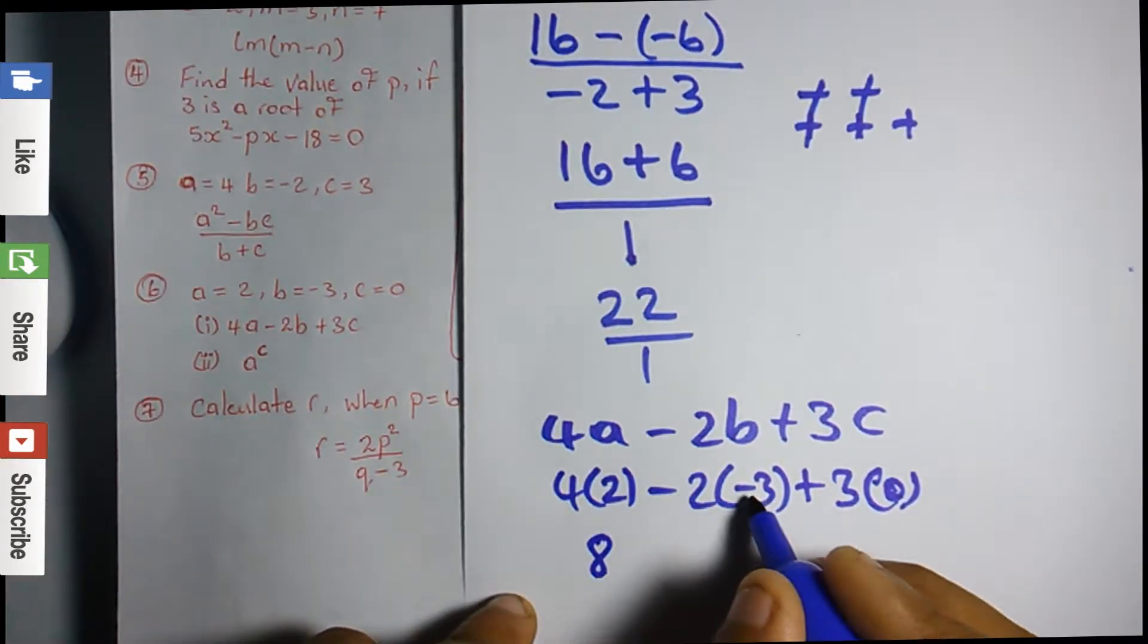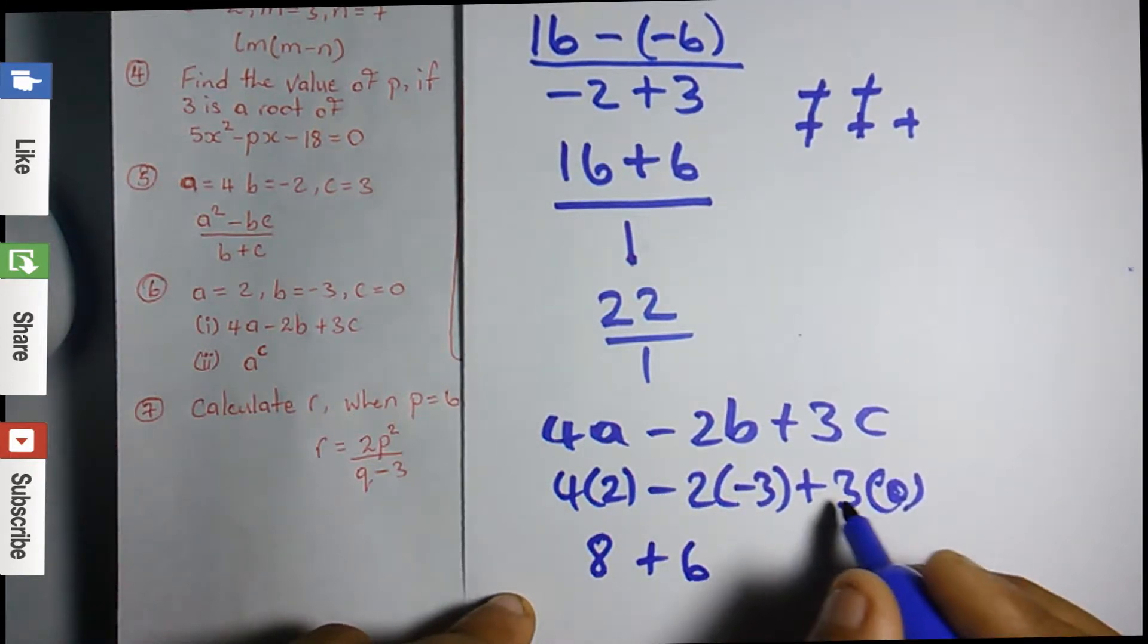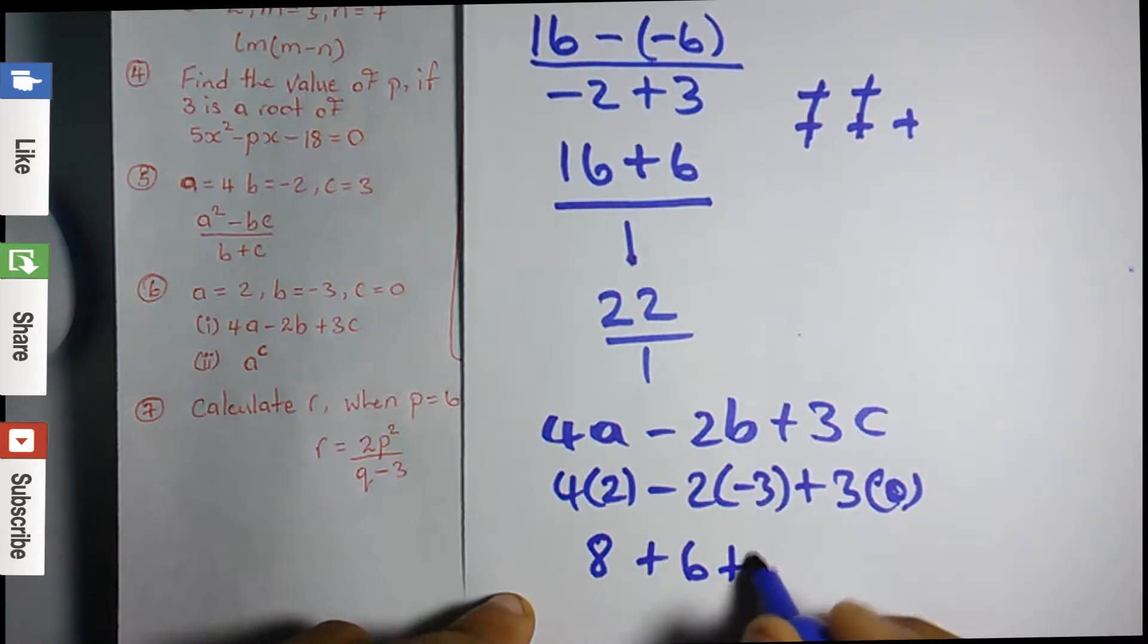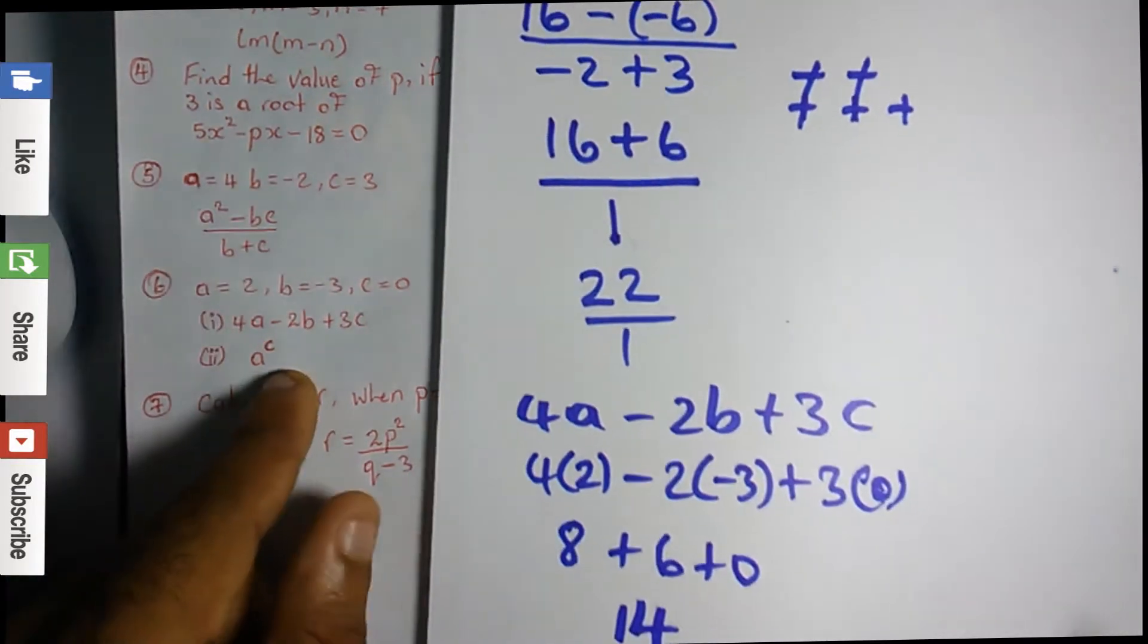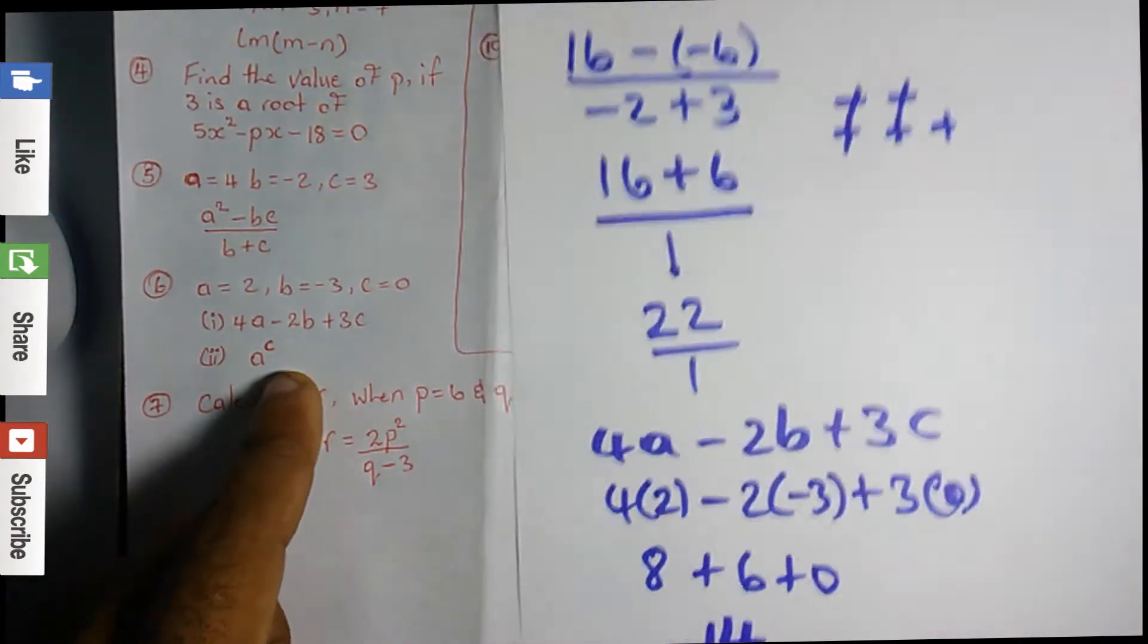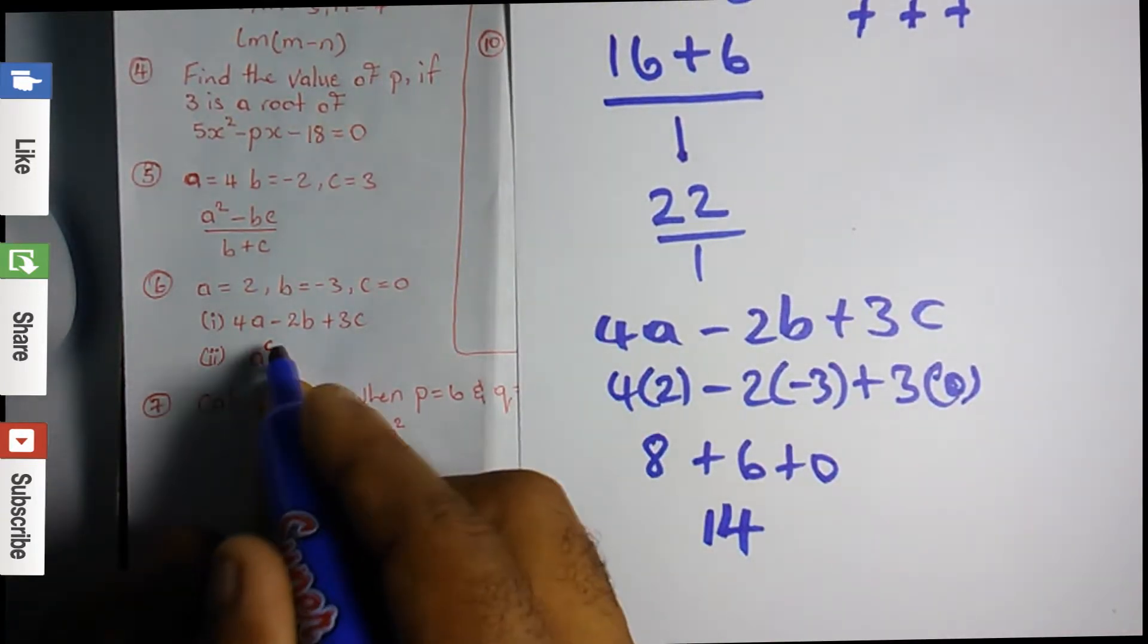Negative times negative is positive. 2 times 3 is 6, plus 3 times 0 is 0, so 0 is not going to change anything. 8 plus 6 is 14. Now the second part of that question is a raised to the c power.